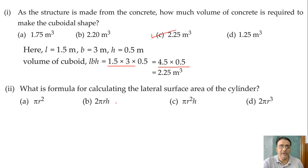What is the formula for calculating the lateral surface area of the cylinder? Which option? Lateral surface area of the cylinder. Option B. Option B is the correct answer. That is 2πRH.